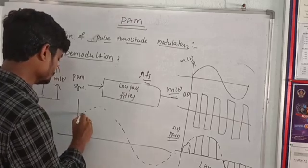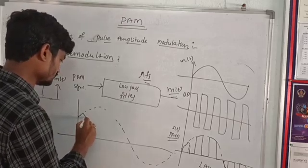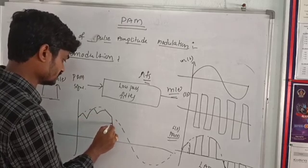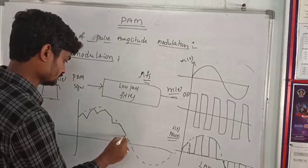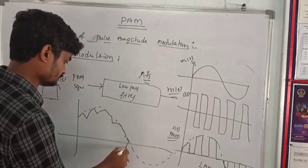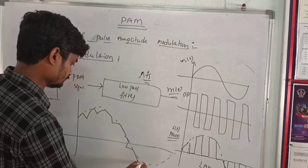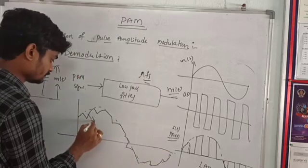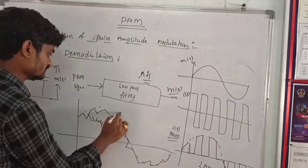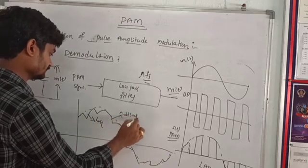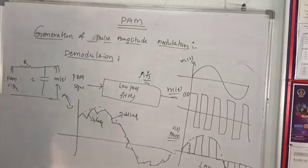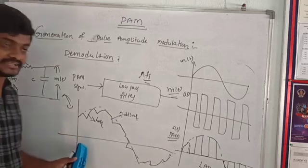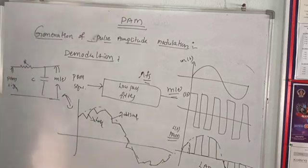This is the charging — the capacitor charging and discharging. This is the discharging condition, so you can get your recovered message signal from the PAM signal. Pulse Amplitude Modulation.